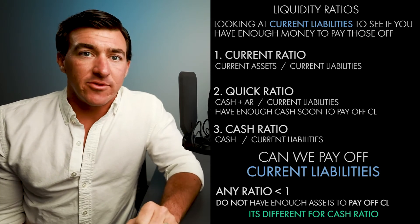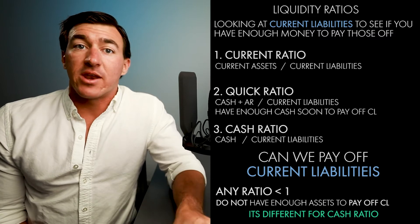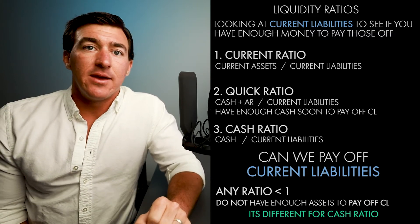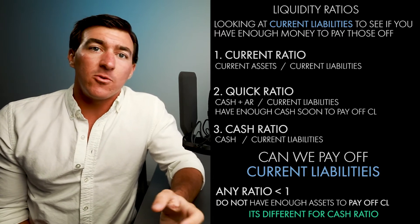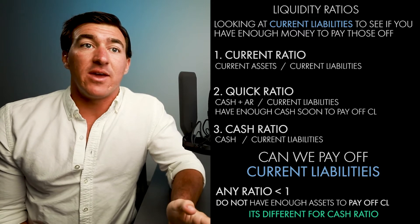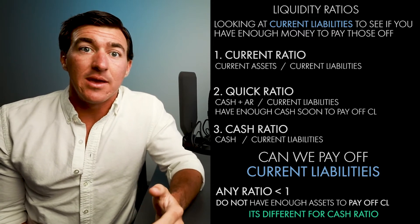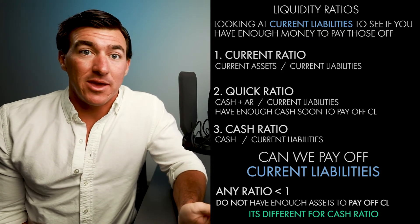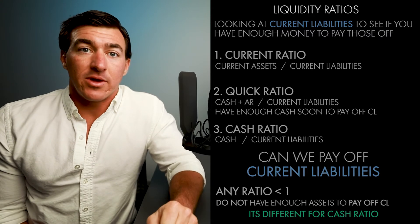This connects to working capital — current assets minus current liabilities — and their relationship. The way to look at liquidity ratios is: what does your working capital look like? Is it healthy? Or do you have a ton of accounts payable, which is a current liability, and very little cash or accounts receivable — meaning you're not going to be able to pay your suppliers anytime soon? Those are the kinds of things investors and analysts are really looking at.